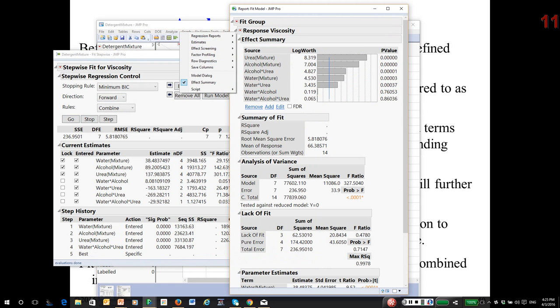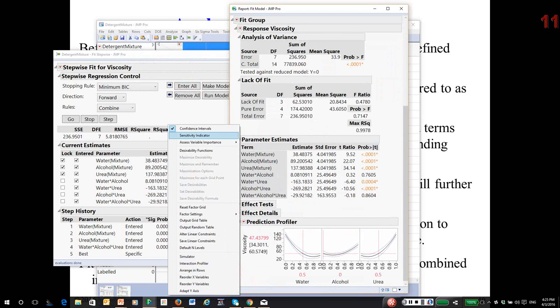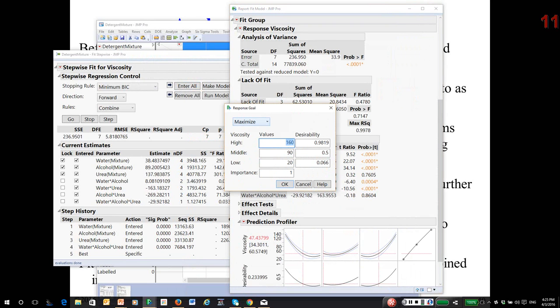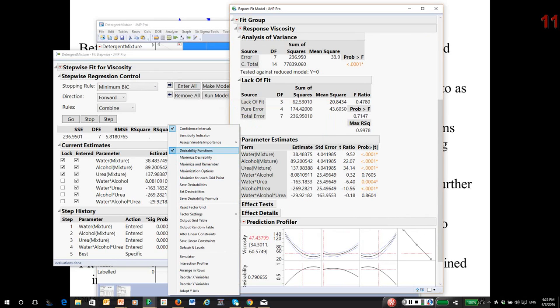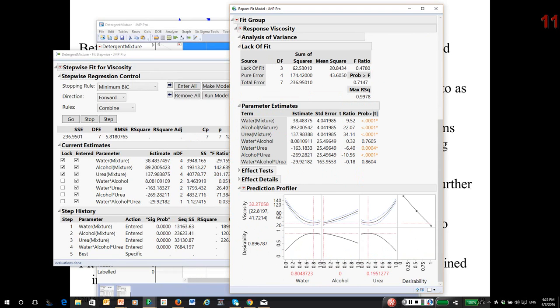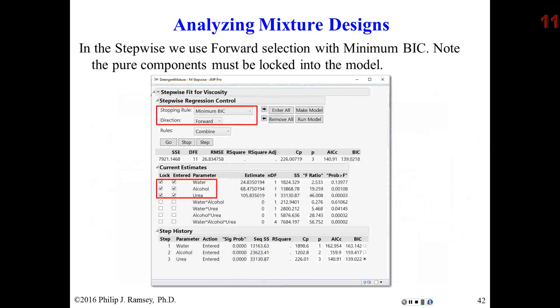So once again, I call up the profiler. And I want to use desirability functions. And I want to minimize viscosity. And I maximize desirability. Now it recognizes the constraint. So it's recommending basically 80% water, 20% urea, and no alcohol. So this is really an approach. And it is discussed in a note. So you can step through the details.